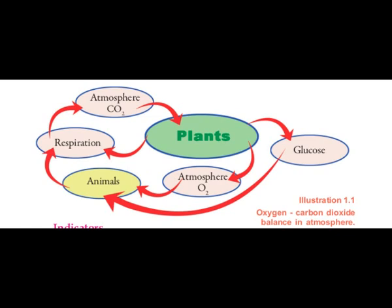Let us see how to maintain oxygen and carbon dioxide balance in the atmosphere. Plants and animals exhale carbon dioxide during respiration. The plants receive carbon dioxide from the atmosphere for photosynthesis and produce glucose and release oxygen to the atmosphere. Hope you understood the role of plants in maintaining the balance of oxygen and carbon dioxide.